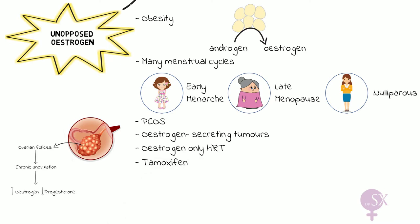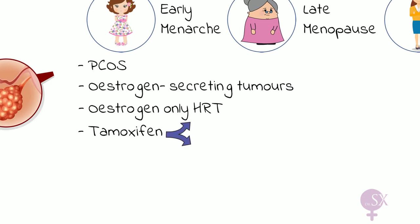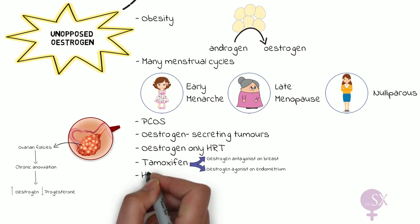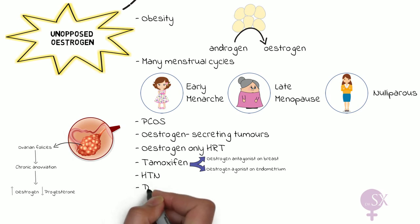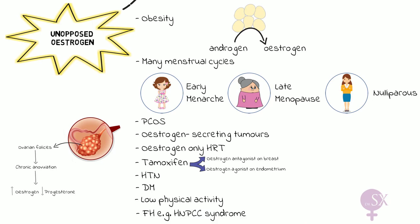Tamoxifen can also result in excess estrogen. It is a breast cancer medication which blocks estrogen receptors in the breast but activates estrogen receptors in the uterus. Other risk factors include diabetes, hypertension, and low physical activity, which have been linked to endometrial cancer. Finally, hereditary non-polyposis colorectal cancer, also known as Lynch syndrome, is a genetic condition conferring high risk for both colon cancer and endometrial cancer.